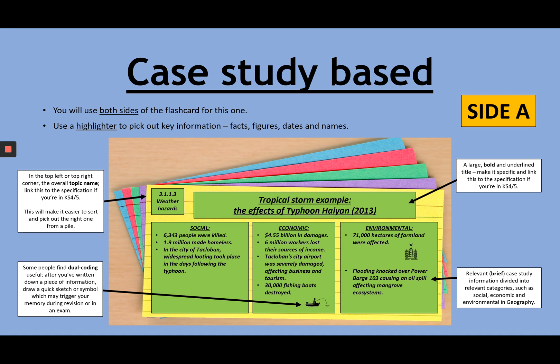So, for example, everyone who's done this case study will know that 30,000 fishing boats being destroyed was a really key impact, quite a significant one. So I've drawn a tiny fishing boat so that helps me remember. And over here, I've gone for some crops to signify farmland.